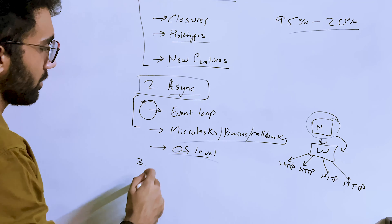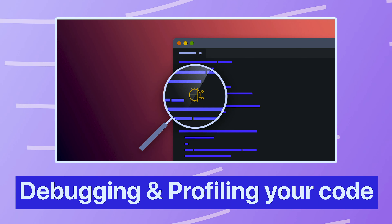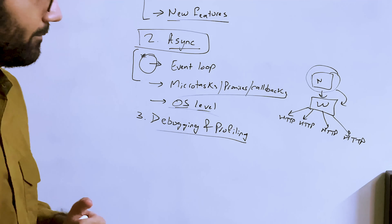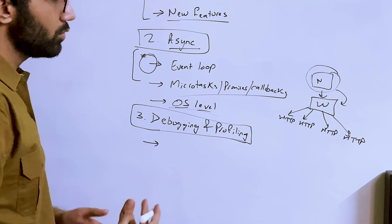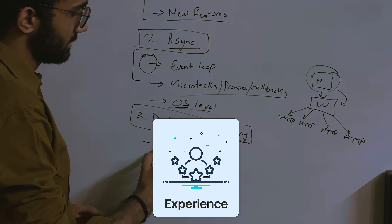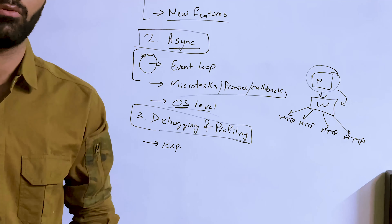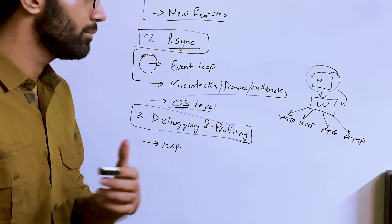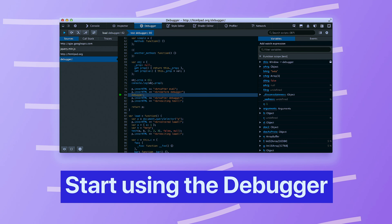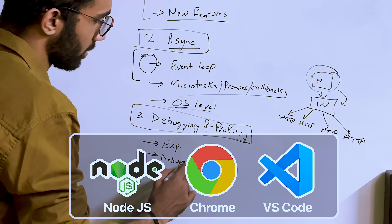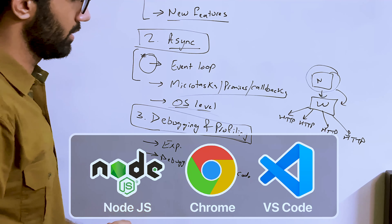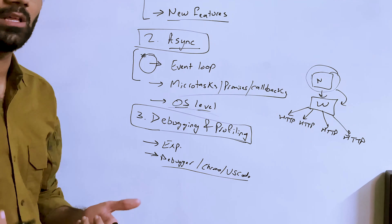The third and probably the most important aspect of a senior developer is debugging and profiling your code. Debugging means being able to efficiently debug a program. The first quality is experience — the more errors and edge cases you've seen, the more quickly you can trigger that memory. Alongside experience, you should start using the official debugger — Node.js debugger, Chrome debugger, or VS Code's built-in debugger. Real debugging in serious codebases requires using these debuggers, not just console.log.